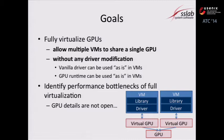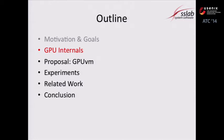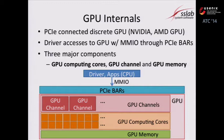We identify the performance bottlenecks of virtualization. We assume PCI Express connected discrete GPUs, such as NVIDIA GPUs. The device driver accesses the GPU via MMIO through PCI Express. There are three major components in the GPU: GPU computing cores, GPU channels, and GPU memory.